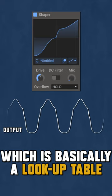Wave shaping is a distortion type that alters any input with a transfer curve, which is basically a lookup table.